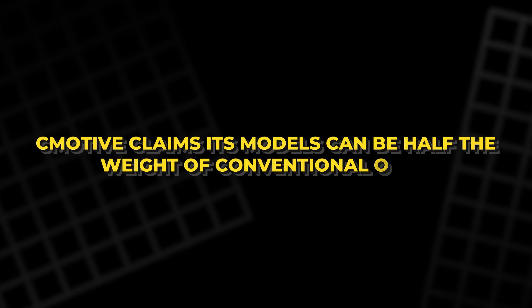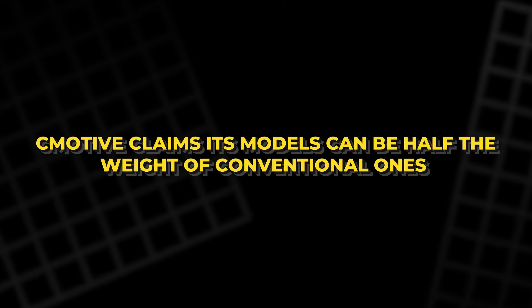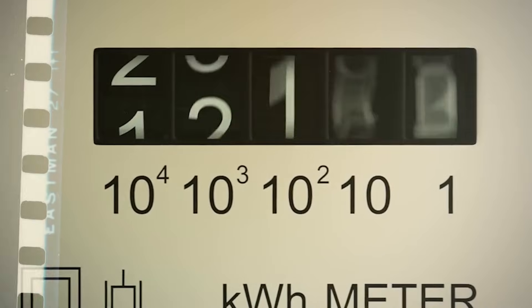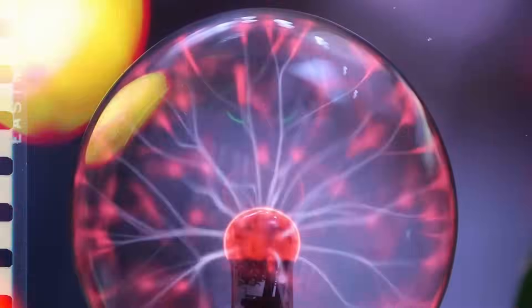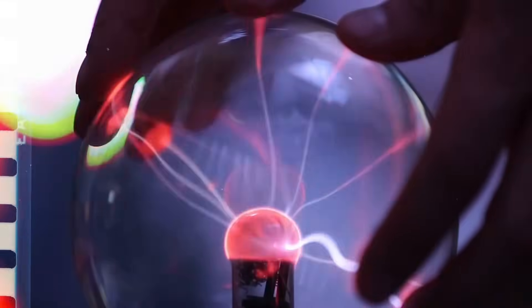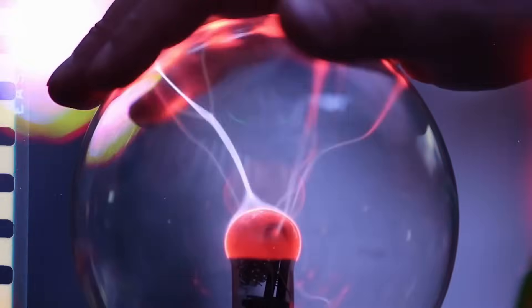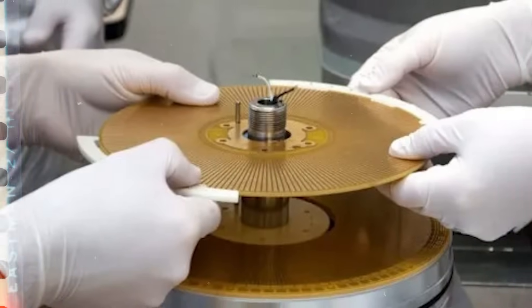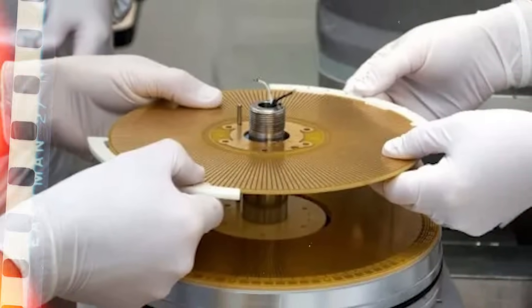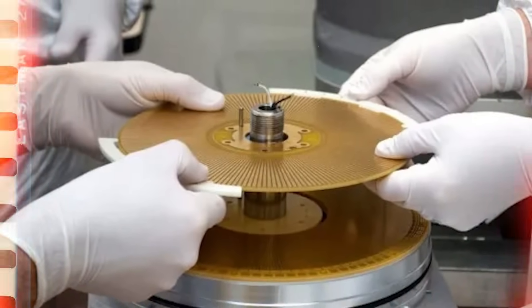C-Motive claims its models can be half the weight of conventional ones while still delivering useful power. What was once only a scientific demonstration now looks like a real alternative. By replacing magnets with static force, C-Motive is trying to rewrite the rules of motion.